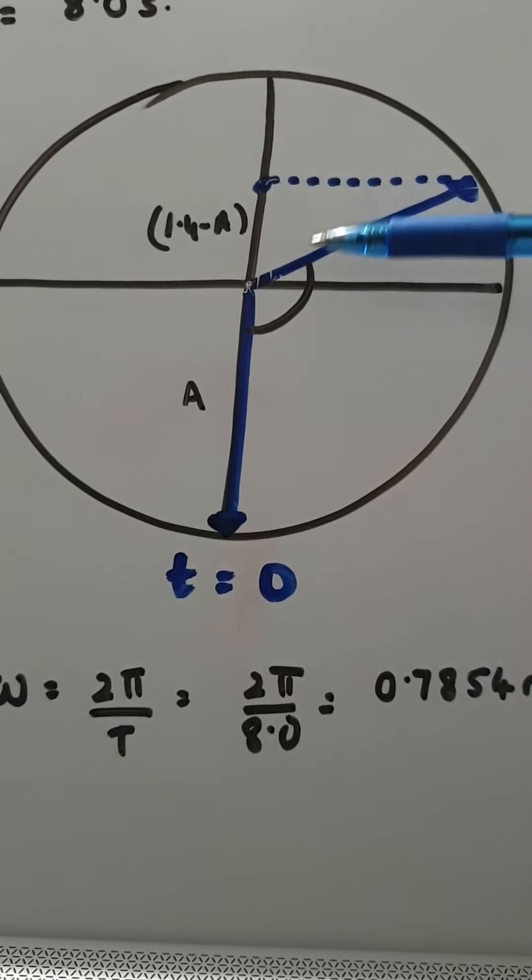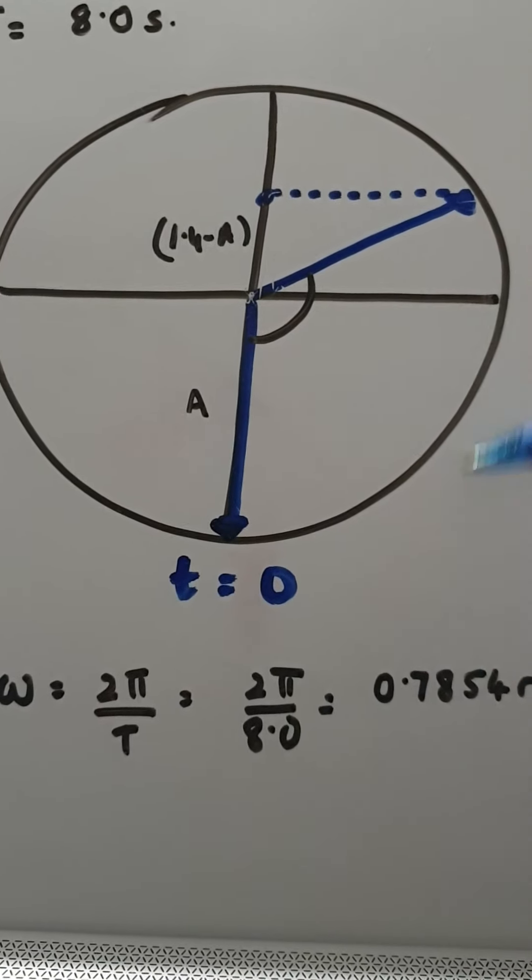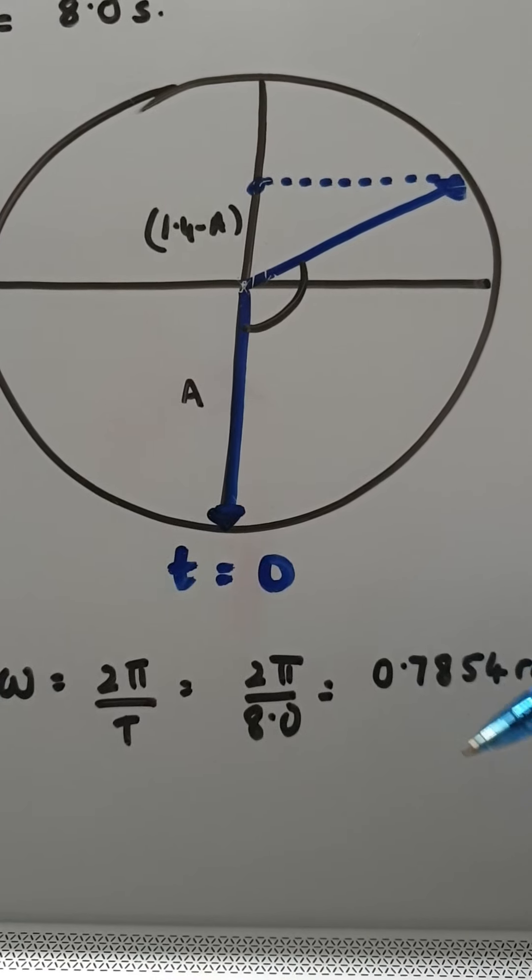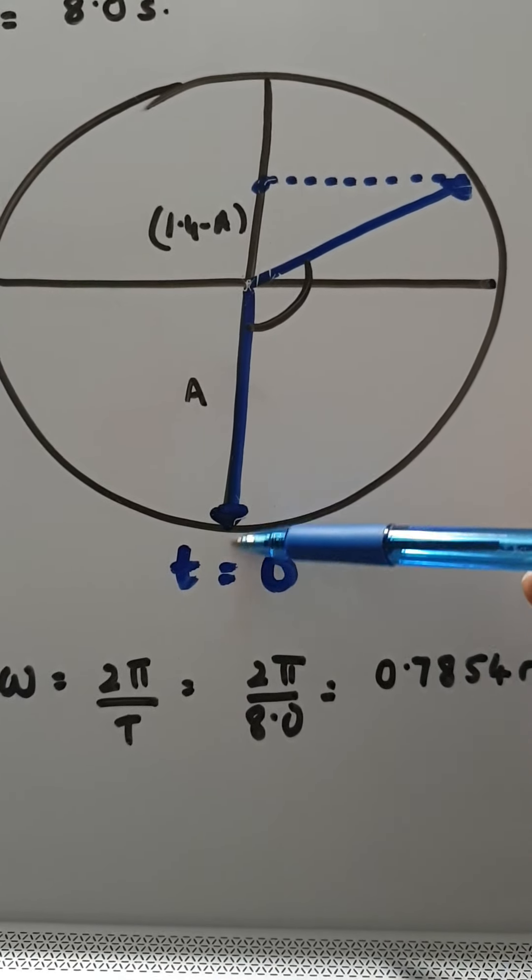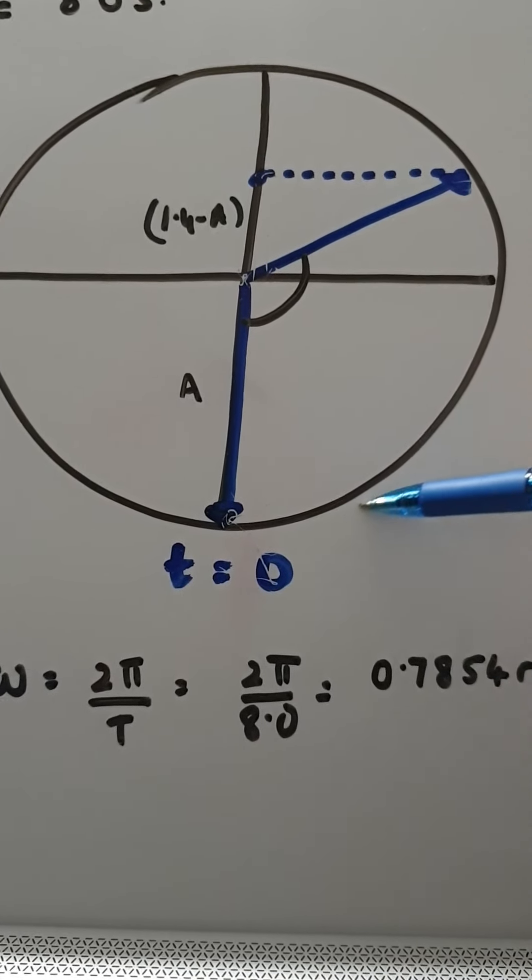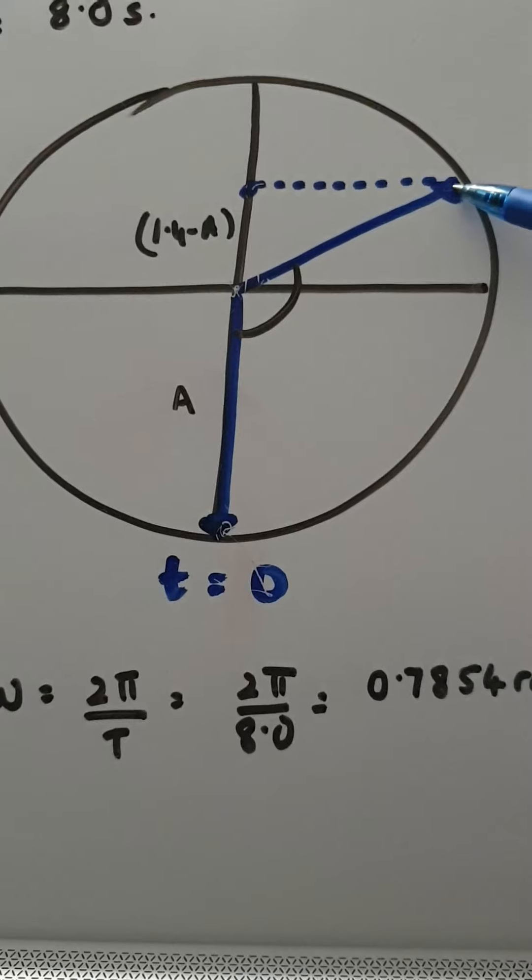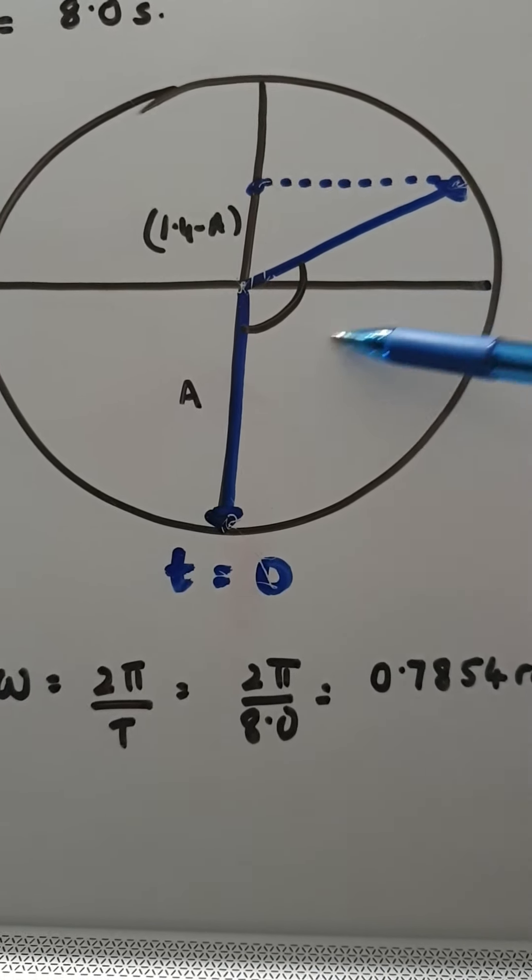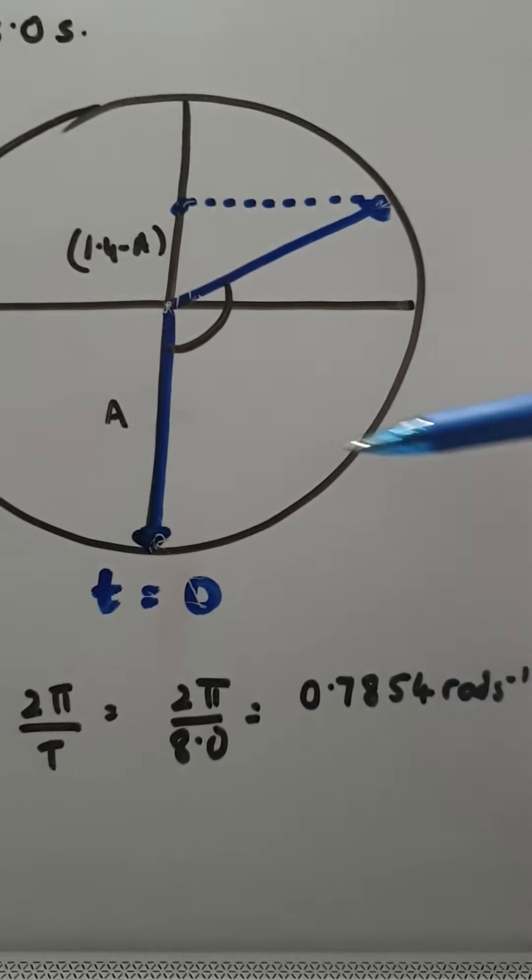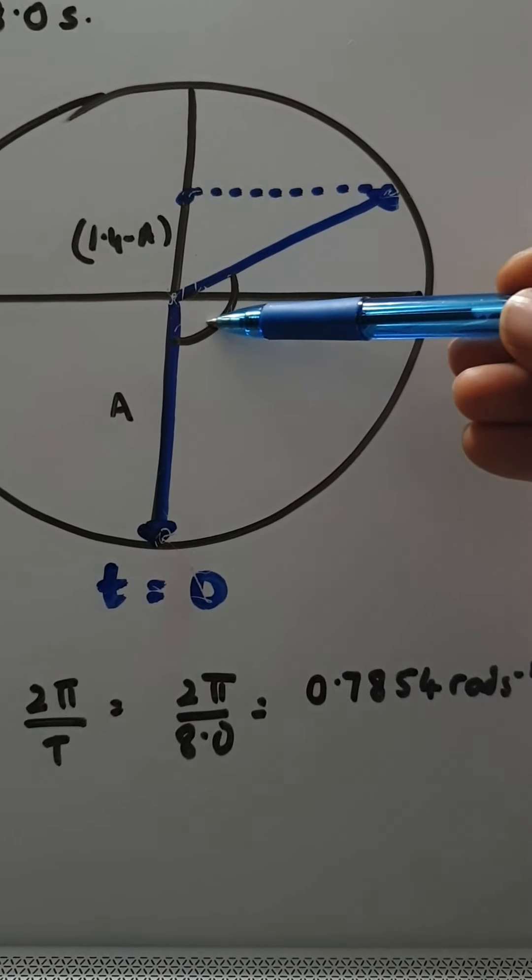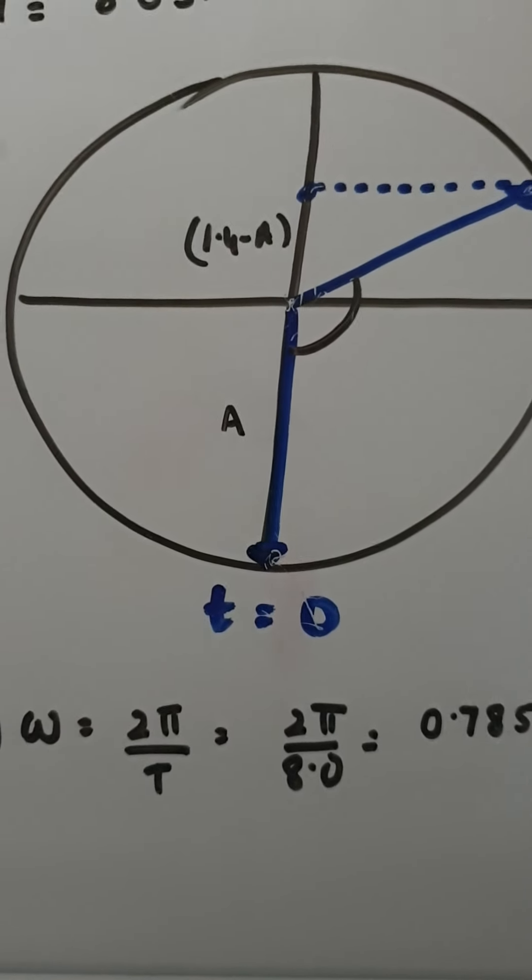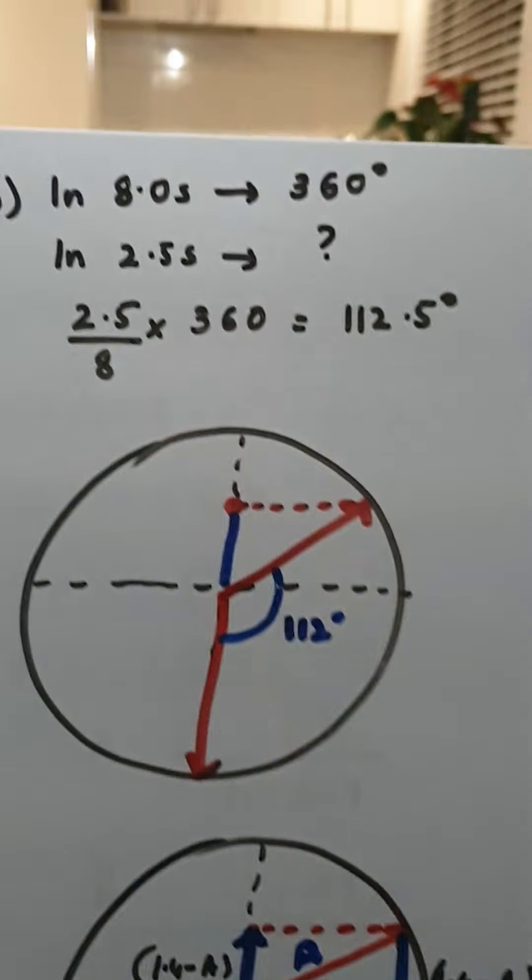And then it said mark on this reference circle where the SHM particle and the reference particle was at the start. So I have just put t equals 0. Let's assume it's here and then the reference particles move to all the way up here in 2.5 seconds. So that's the angle it's turned through. Then the next question is calculate the angle, this angle through which the reference particle has turned through. So there are many ways of doing it but this is one way of doing it.